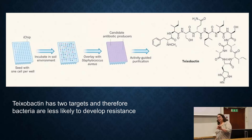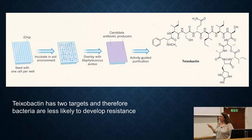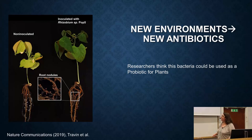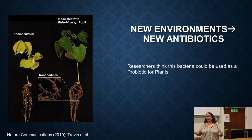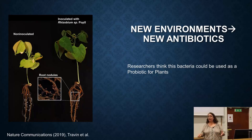They went back in, identified that bacteria, and eventually isolated the compound teixobactin. Teixobactin is really interesting because it has two targets in the bacterial cell, making it less likely to evolve resistance. Another environment recently explored involves bacteria associated with the root nodules of plants — researchers found it produced an antibiotic killing harmful bacteria, and are now investigating its potential use in plants or possibly humans.